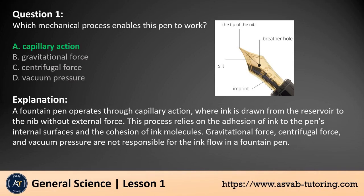The answer is a. A fountain pen operates through capillary action, where ink is drawn from the reservoir to the nib without external force. This process relies on the adhesion of ink to the pen's internal surfaces and the cohesion of ink molecules. Gravitational force, centrifugal force, and vacuum pressure are not responsible for the ink flow in a fountain pen.